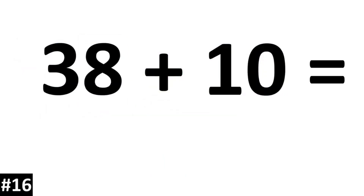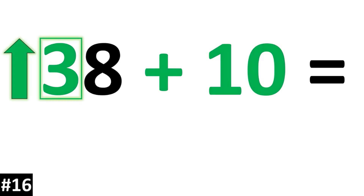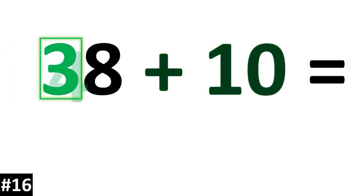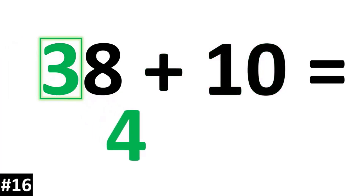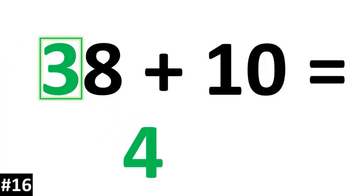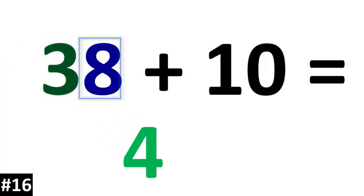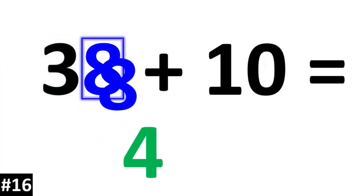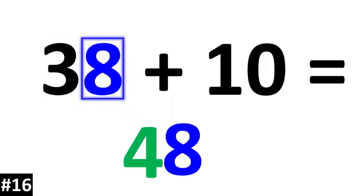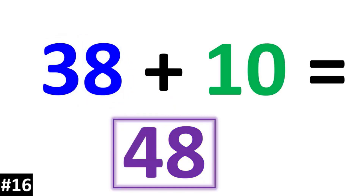38 plus 10: the tens digit of 3 is going to become a 4. The ones digit stays the same. 38 plus 10 is 48.